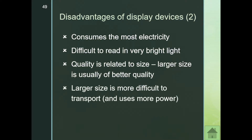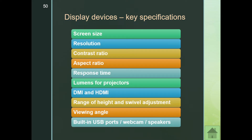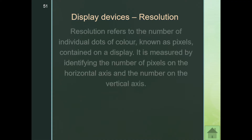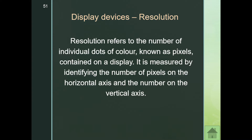When it comes to choosing a display device, there are a number of things we need to look at. The first is resolution. Resolution refers to the number of individual dots of color known as pixels contained on a display. It's measured by identifying the number of pixels on the horizontal axis and the number on the vertical axis. The higher those numbers, the better the quality of the picture displayed.